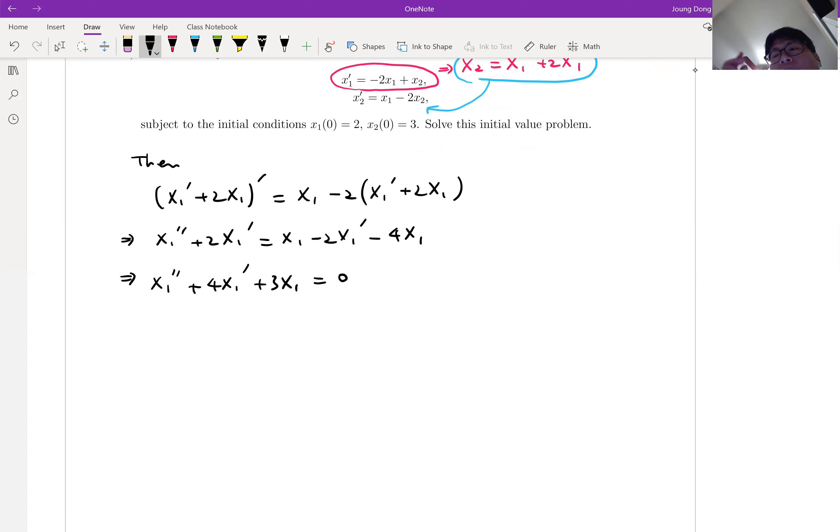And we already practice a lot how we can take care of this one, which is characteristic equation. Here we go. So characteristic equation of this homogeneous equation is r squared plus 4r plus 3 equals 0. Then we can easily factor this guy. That is the simplest case. r plus 1 times r plus 3 equals 0.